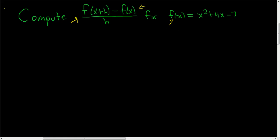Before we do this, it might be a good idea to think about what f of x plus h is. So f of x is simply x squared plus 4x minus 7. So f of x plus h, it's the same thing, except it's x plus h squared. You just replace the x with x plus h, and then plus 4 times x plus h, and then minus 7.